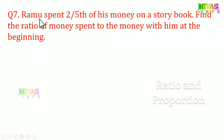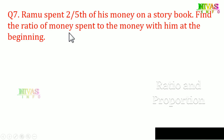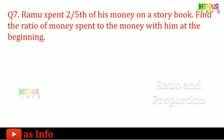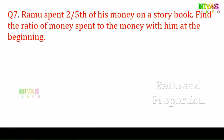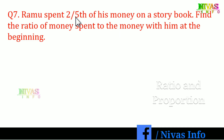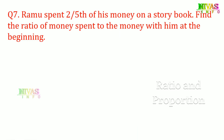Next, seventh question: Ramu spent two-fifths of his money on a storybook. Find the ratio of money spent to the money he had at the beginning. The fraction 2/5 tells us the numerator is the spent amount and the denominator is the total beginning amount, so the ratio is 2 is to 5.